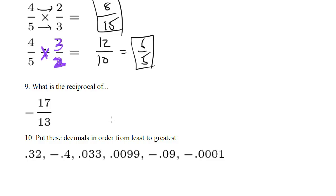What is the reciprocal of negative 17 over 13? Well the reciprocal, just like we saw in the last problem, just means flip the fractions, so this becomes negative 13 seventeenths.